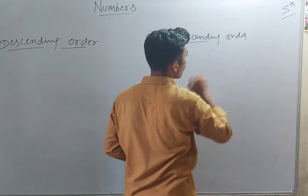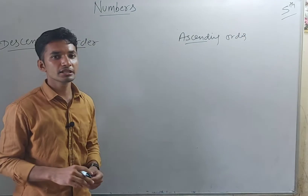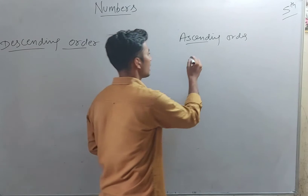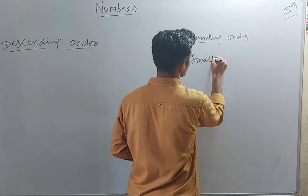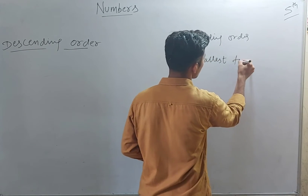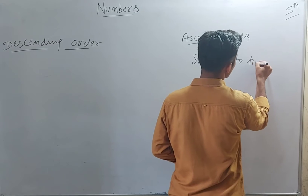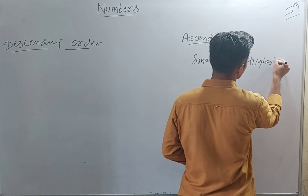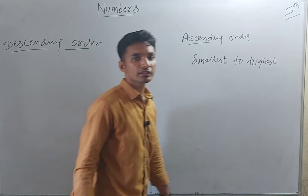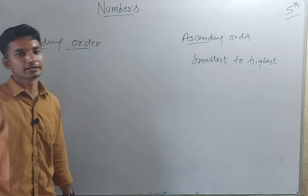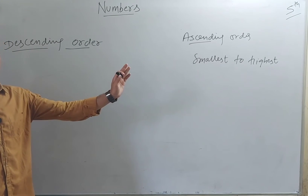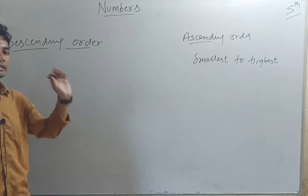What is the ascending order? It is the arrangement of numbers from smallest to the highest — smallest to the highest. Just the reverse of ascending order is the descending order.